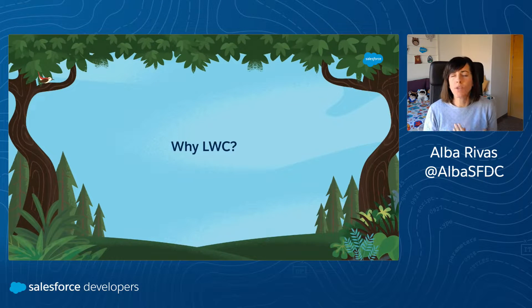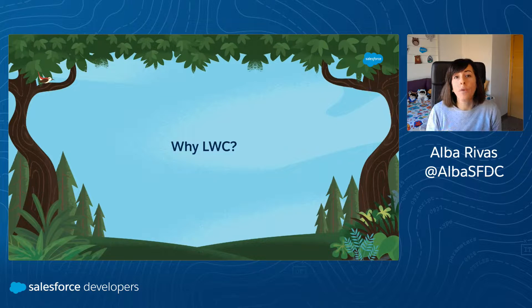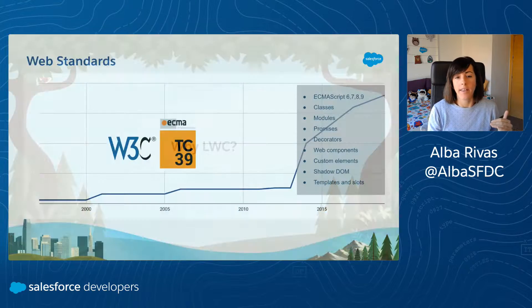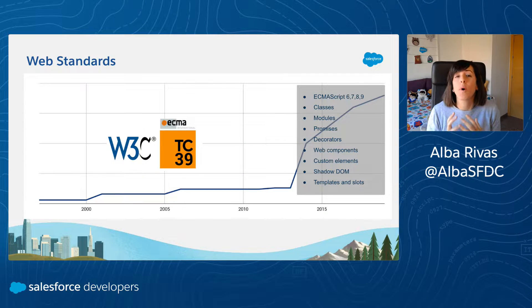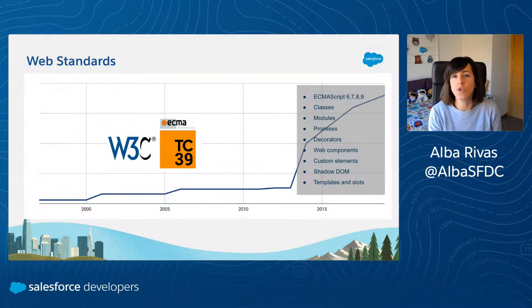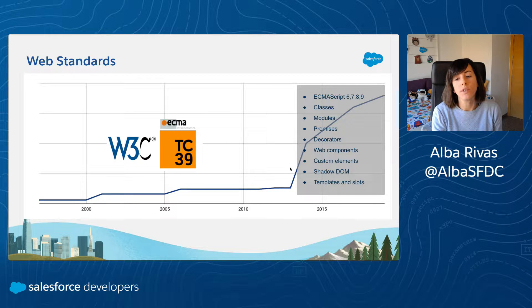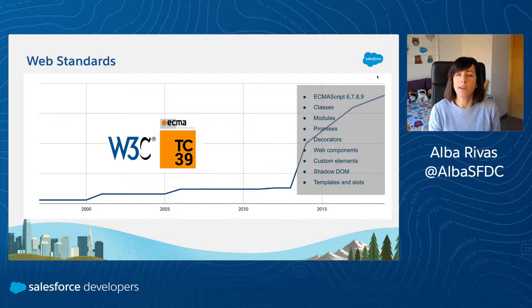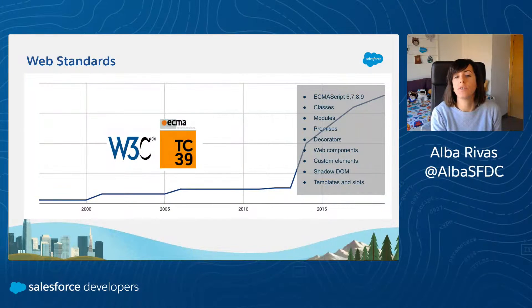First, with a quick introduction to Lightning Web Components, I want to explain why we decided to release this new framework, being Aura so recent. The quick answer is because of web standards. Web standards have experienced a very quick evolution in the last years. If we take a look at this curve, we see that from 2014 the curve starts becoming much more steep. Two organizations have been working closely and hard to standardize everything related to web components.